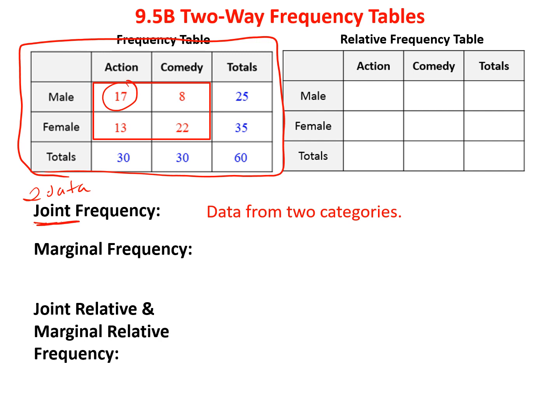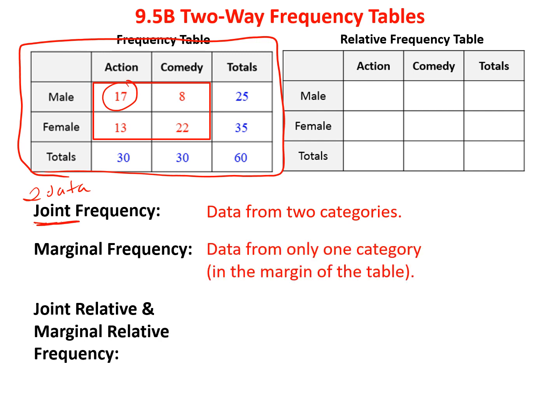When we talk about marginal frequencies, that's where the data is only in one category. For example, the 30 is the total of all the people who preferred action, whether men or women. What's in blue — either the total of the column or the total of the row — those are my marginal frequencies. Marginal frequency is only dealing with one set of data: the total of a row or total of a column.